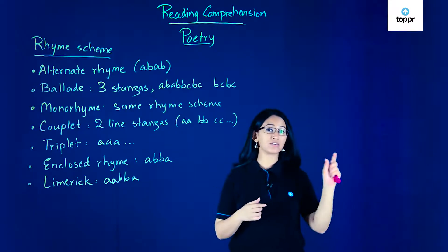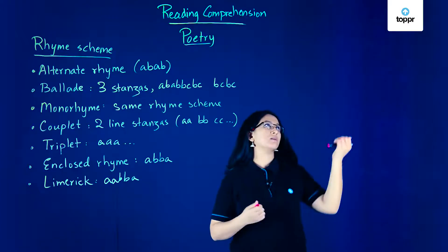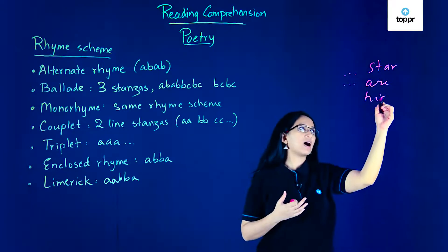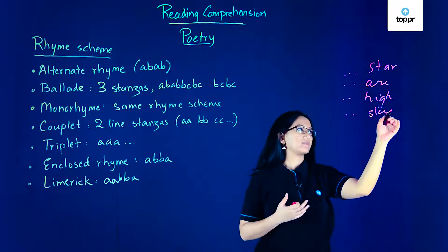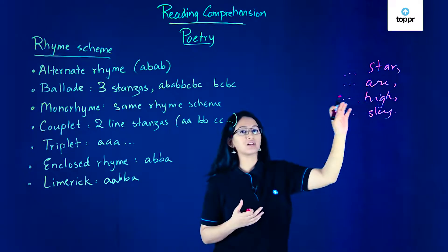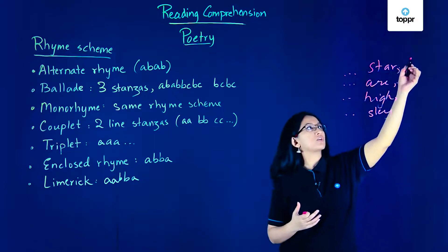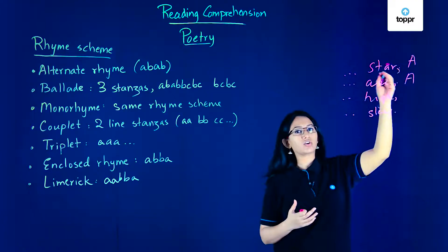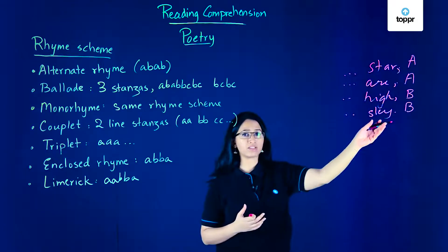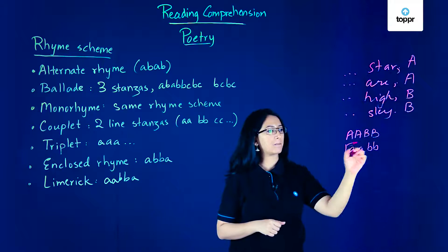The rhyme scheme is the pattern of rhyme that a poem follows. For instance, take 'Twinkle Twinkle Little Star' — 'star' and 'are' are rhyming, so I can denote them as A and A. Then 'high' and 'sky' are rhyming, so those are B and B. The rhyme scheme of this stanza is therefore AABB.